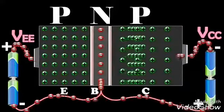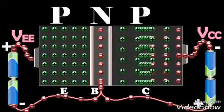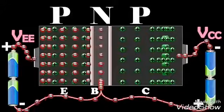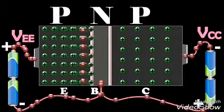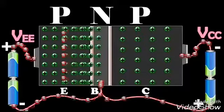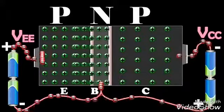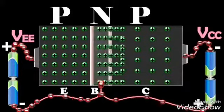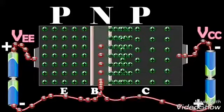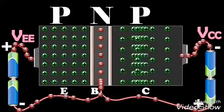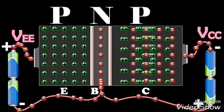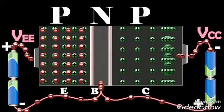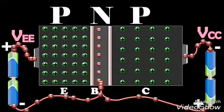The loss of total number of holes in the emitter is made up by the flow of an equal number of electrons from the emitter to the positive terminal of the battery. The flow of holes from the emitter to the base gives rise to emitter current IE.